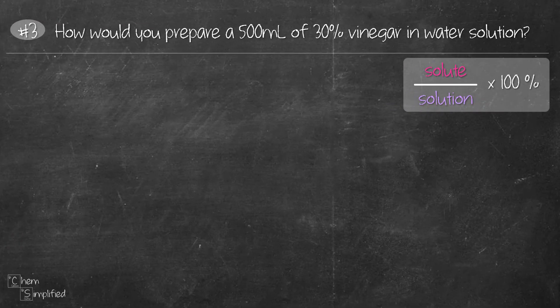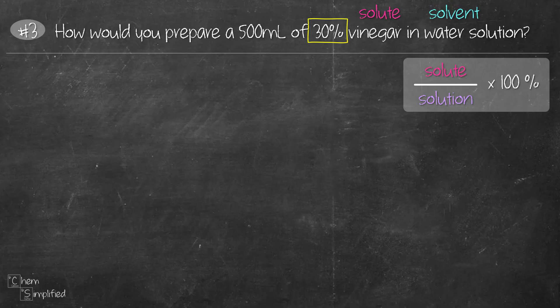Now we move on to a slightly harder question. Notice now instead of given the solute and solution, we now have the percentage instead. We're given the percent concentration for vinegar in water solution. You see how it's worded? Vinegar in water solution. That means vinegar is the solute and water is the solvent. The reason being solute is always dissolved in the solvent. So together, solute and solvent will mix to become the solution.